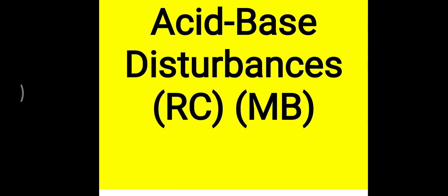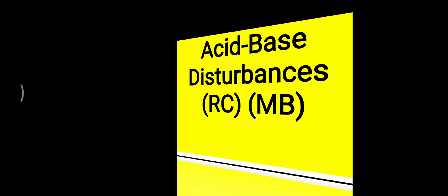So remember RC and MB: RC means respiratory disturbance is related with carbonic acid, and MB means metabolic disorder — whether acidosis or alkalosis — is purely related with the bicarbonate ion. That's all about acid-base disturbance.